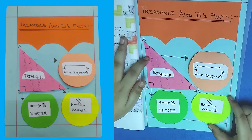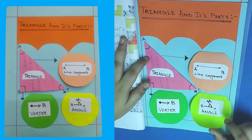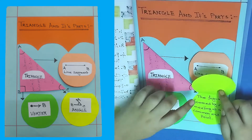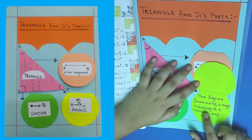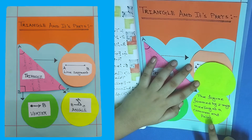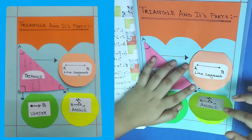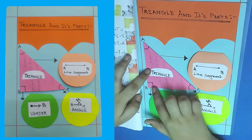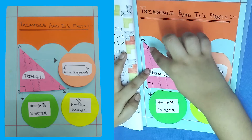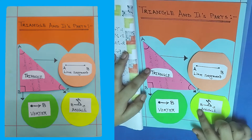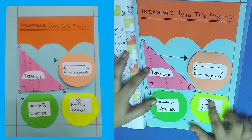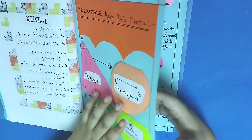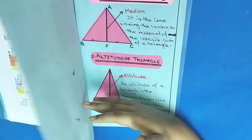Next up we have angles. The figure formed by two rays meeting at a common endpoint is called an angle. See — this is an angle, this is an angle, and this is also an angle. Angle ABC is also an angle. So let's move on to the next page.